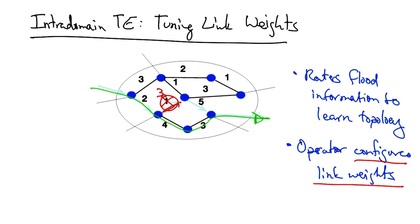So we can see from this simple example that by adjusting the link weights in an intra-domain topology, the operator can affect how traffic flows between different points in the network, thus affecting the load on the network links.